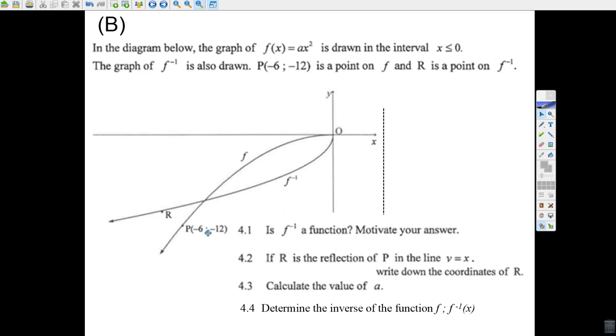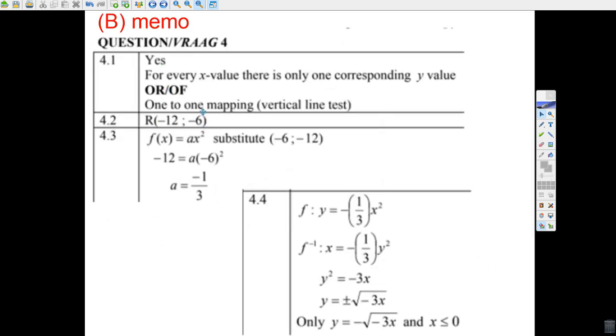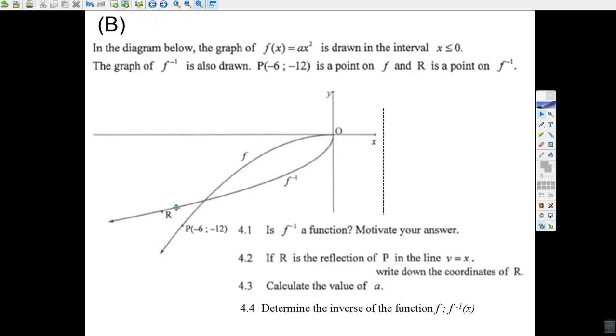R is a reflection of P. If it's a reflection of P in the line y equals x, it's the inverse of it. So all we have to do to find R is switch. R is minus 12 is x, and y is minus 6. R is minus 12 and minus 6.